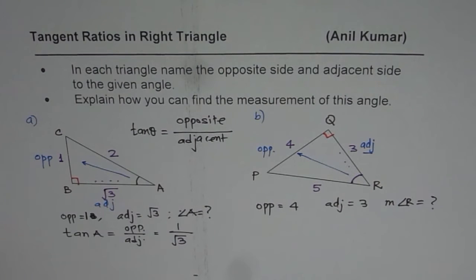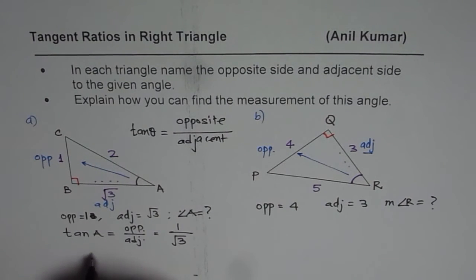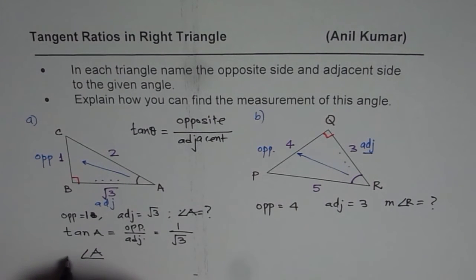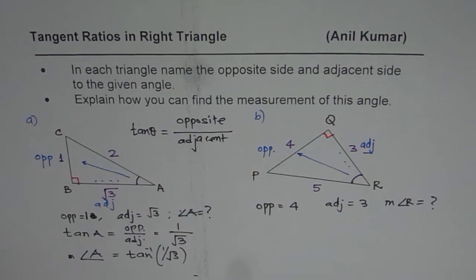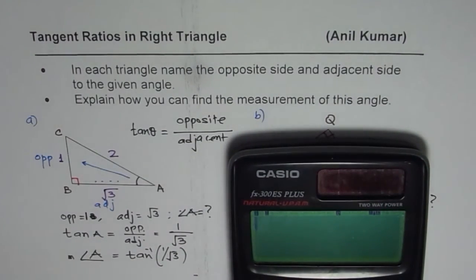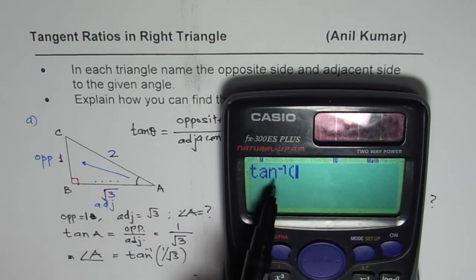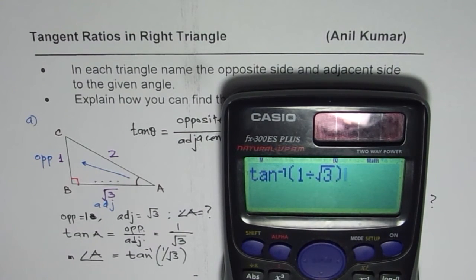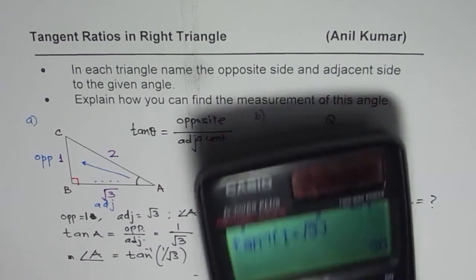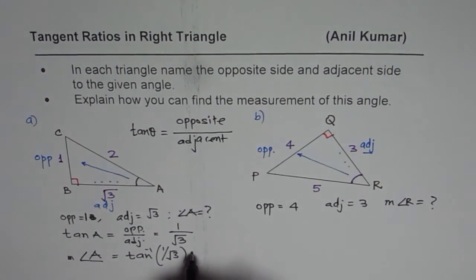Now the question is how do you find angle A from tan A equals 1 over square root of 3. You can use the calculator and find the inverse. The measurement of angle A equals tan inverse of 1 over square root of 3. Use Shift or second function to get tan inverse, then enter 1 divided by square root of 3 in brackets, close the brackets, and press equal. The answer is 30 degrees — I have set my calculator to degrees.